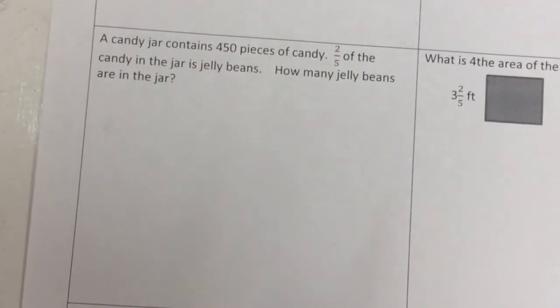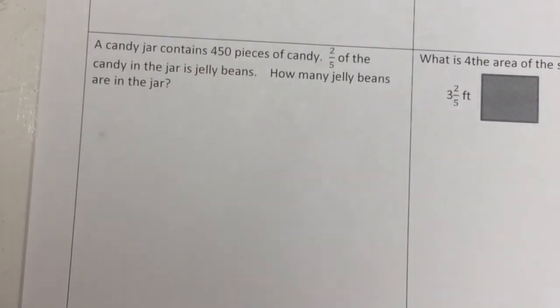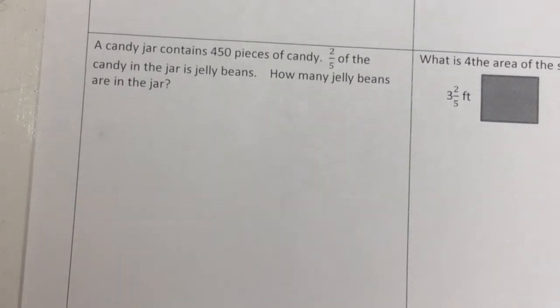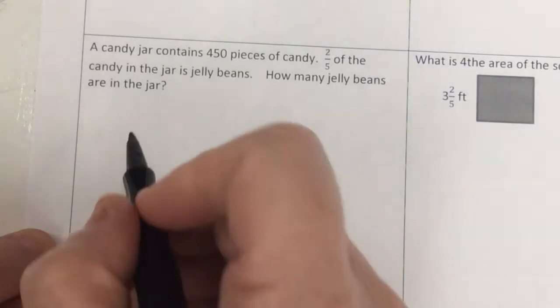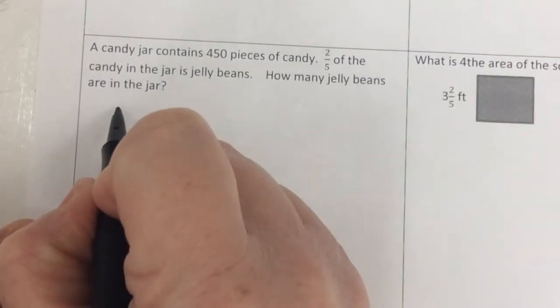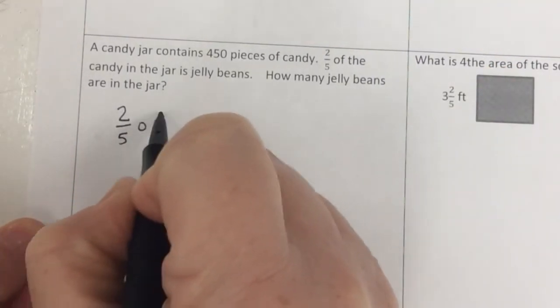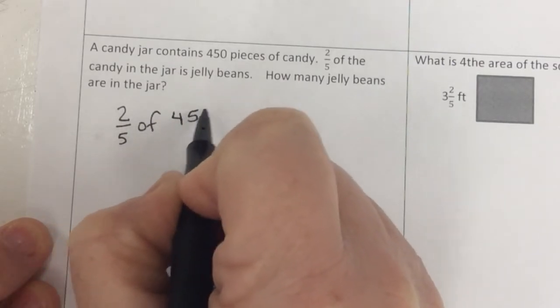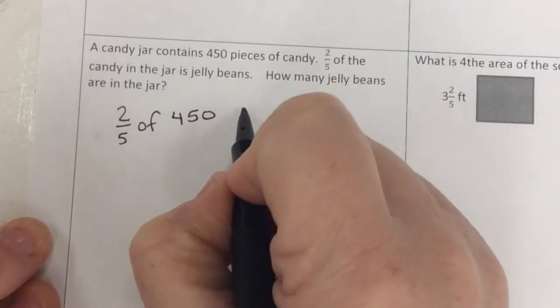Next. A candy jar contains 450 pieces of candy. 2/5 of the candy in the jar is jelly beans. How many jelly beans are in the jar? So really what I want to know is what is 2/5 of 450?